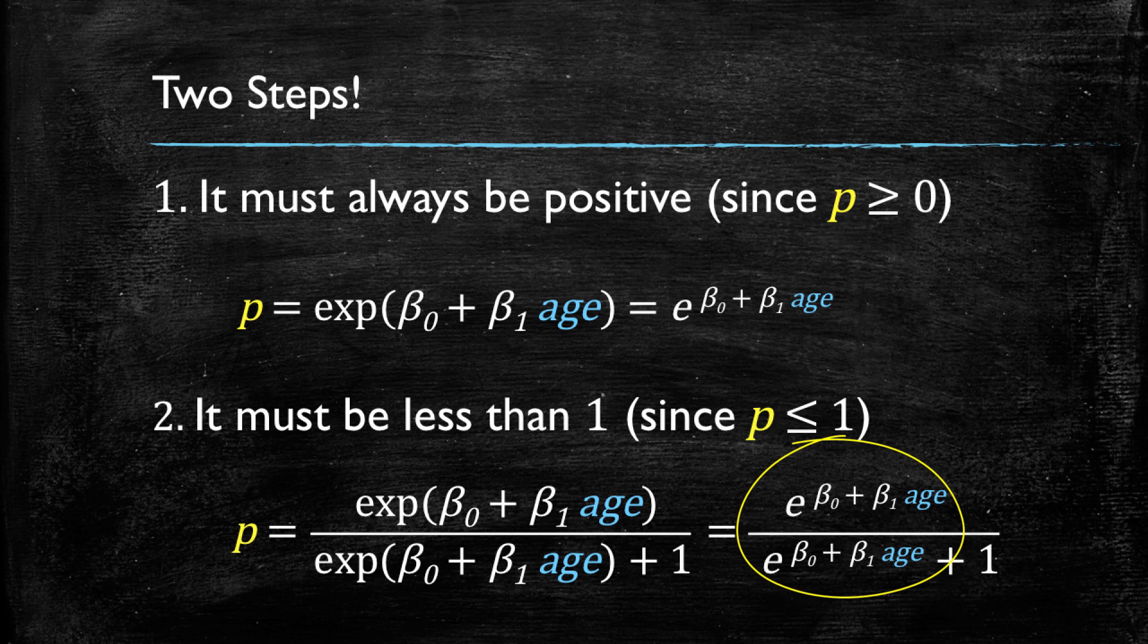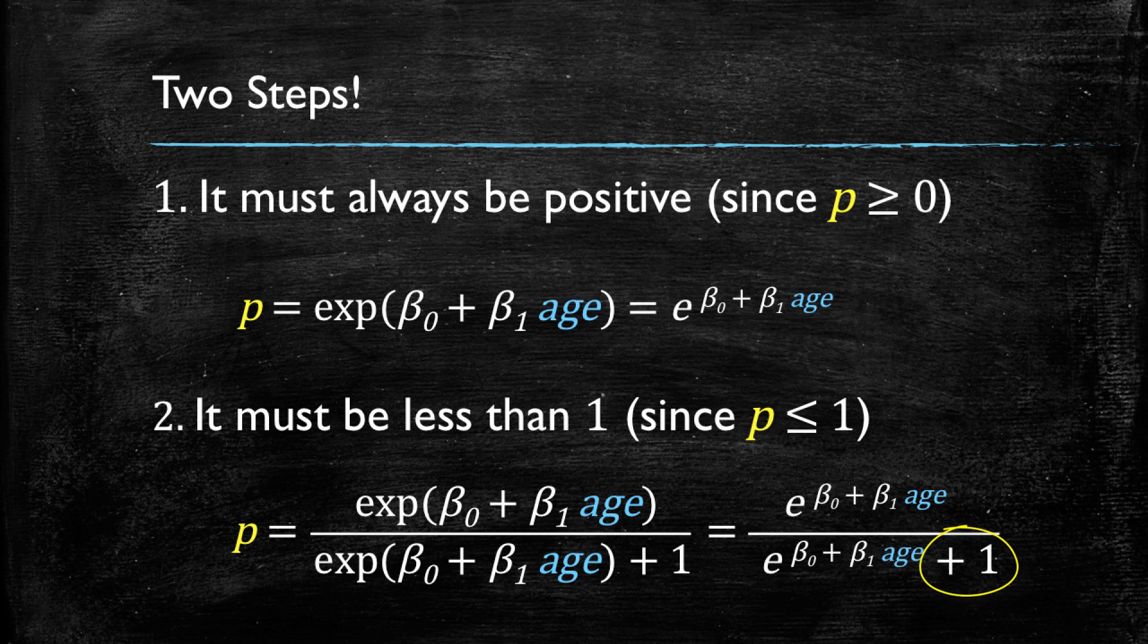We have the same expression above and below, but in the denominator we have a plus 1. Note that we could have added any small value or large value, an epsilon for that matter, and the condition of having a value less than 1 would still be satisfied. However, we use 1 for reasons that will become clearer shortly.